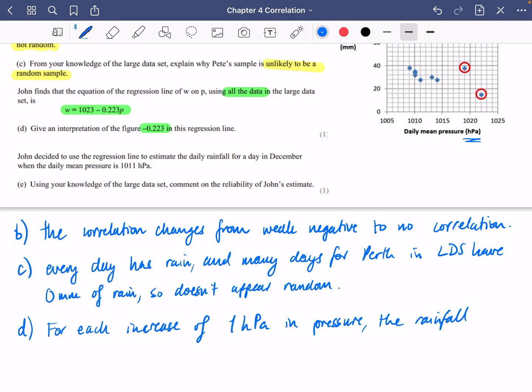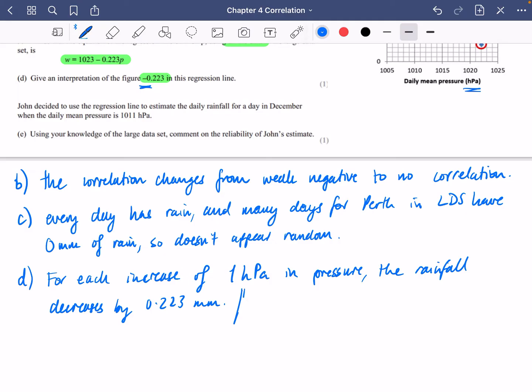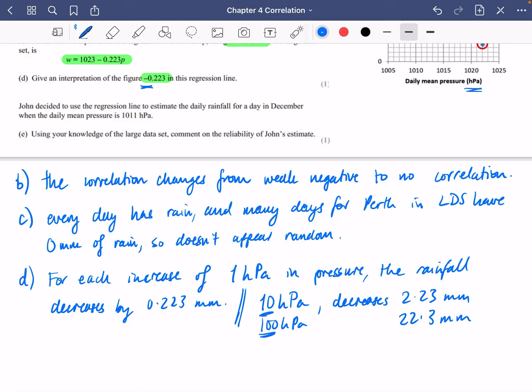So this is saying that for each increase of one hPa in pressure the rainfall is going to be a negative so it decreases by 0.223 millimeters. If you wanted to sometimes people write this you could say for each 10 hectopascals it decreases by 2.23 or you could say for 100 hPa it decreases by 22.3 millimeters. If you wanted to adjust this bit you can also adjust that but I'm happy with the way we've got it.